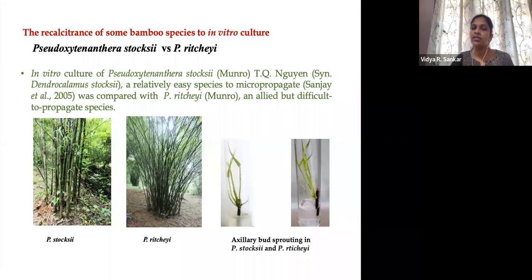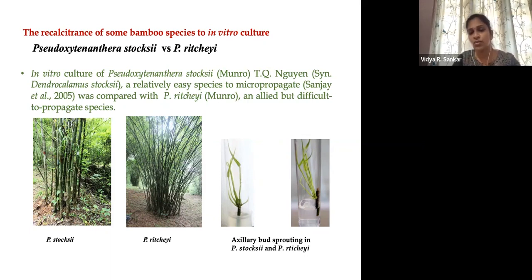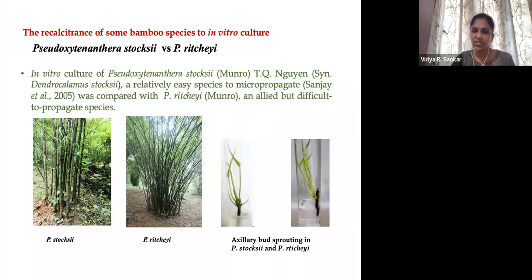Here we compare two species. The first one is Pseudoxytenanthera stocksii and the other one is Pseudoxytenanthera ritchiei. We know that stocksii is an economically very important species, and there are excellent protocols available from INBAR, especially from Dr. Rathore. Ritchiei shares most of the same characters as stocksii. This species is also endemic to the Western Ghats. Ritchiei is a truly solid species, with much harder culms than stocksii.